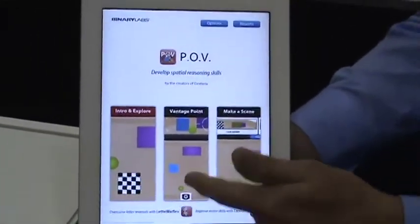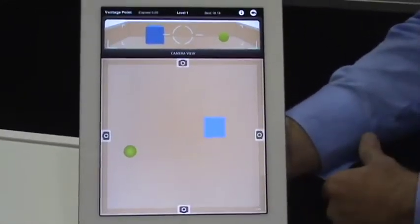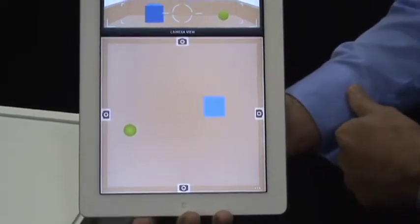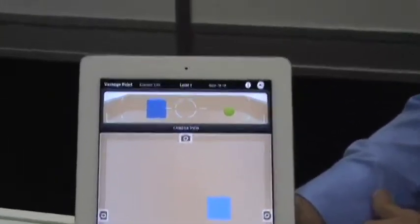The first activity is called vantage point. Tap the camera with the correct view. So we're going to tap the camera with the correct view. So here's where they have to apply their spatial reasoning.